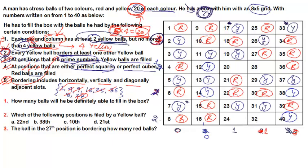Rows 4 and 8 each still need one yellow ball. There are no remaining yellow balls that are unbordered, so we look at slot 20: it could be yellow or red. If slot 20 is yellow, then slot 24 is red; if slot 20 is red, then slot 24 is yellow. Similarly, slots 28 and 32 have the same uncertainty. So we cannot be certain about the colors of slots 20, 24, 28, and 32.